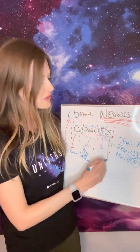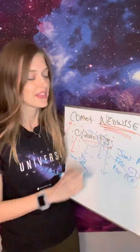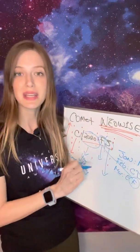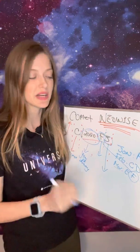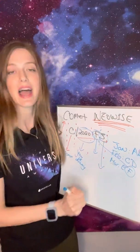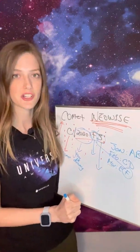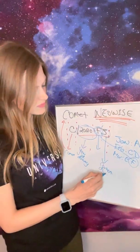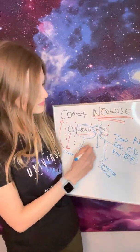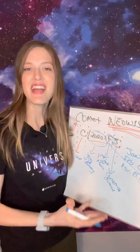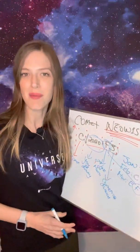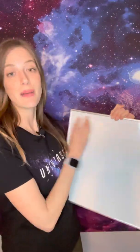The number '3' means it was the third comet to be discovered in the second half of March. And that's how we name comets.